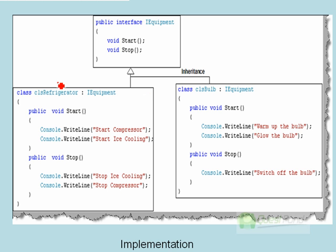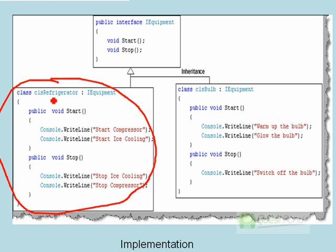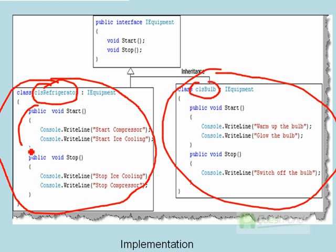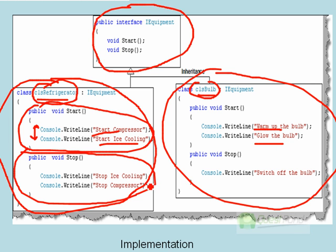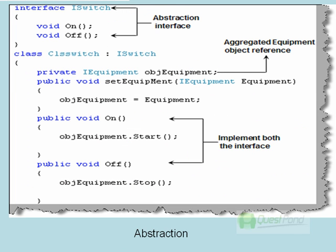We first design the implementation classes. I have a Refrigerator and a Bulb, each with a start and stop method. To make them uniform, they both implement a common interface called IEquipment. Each has its own implementation: to start a refrigerator, I start the compressor and the ice cooling; to start a bulb, I warm and glow it. To stop a refrigerator, I stop ice cooling then the compressor; to stop a bulb, I just switch it off.